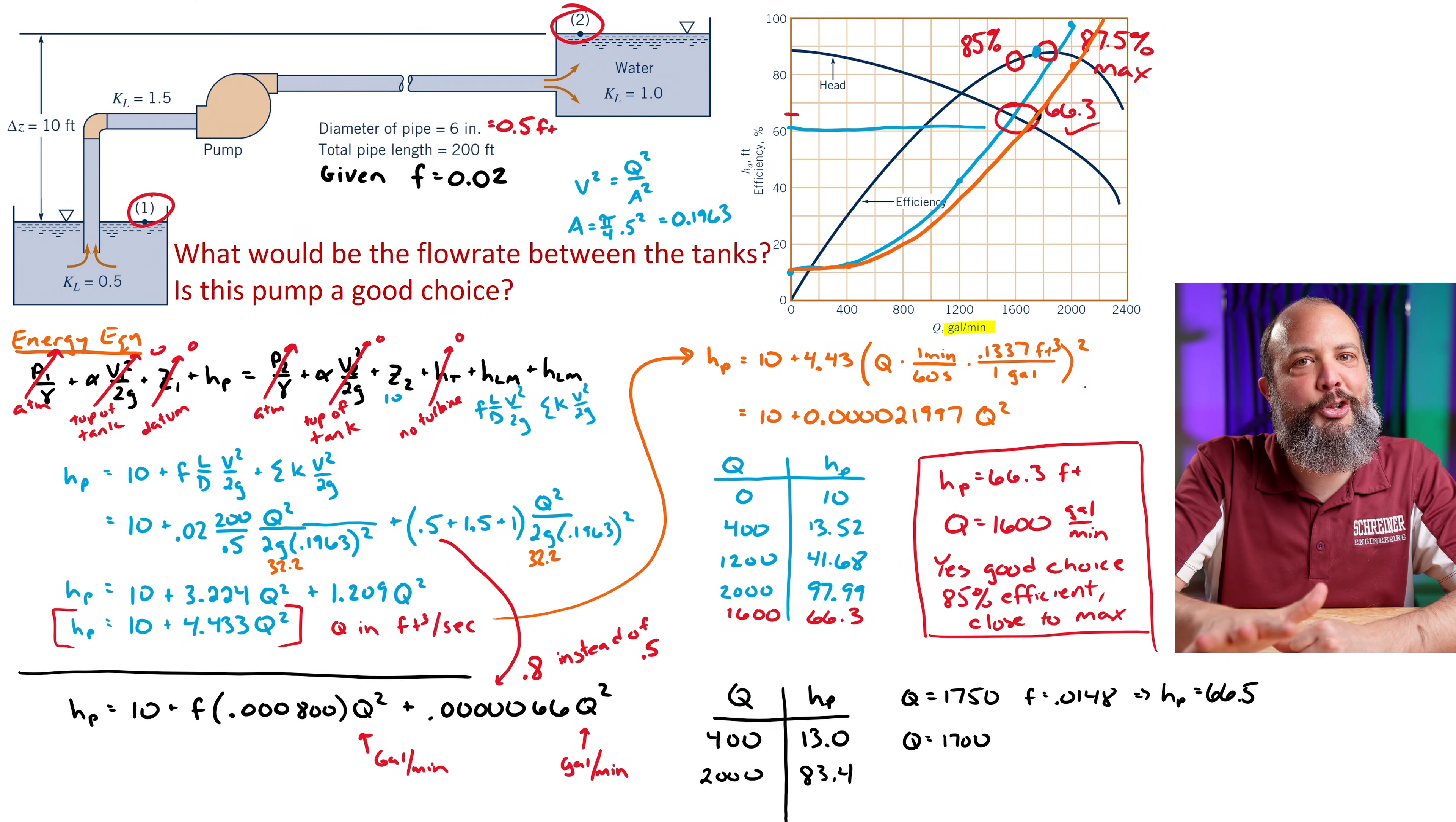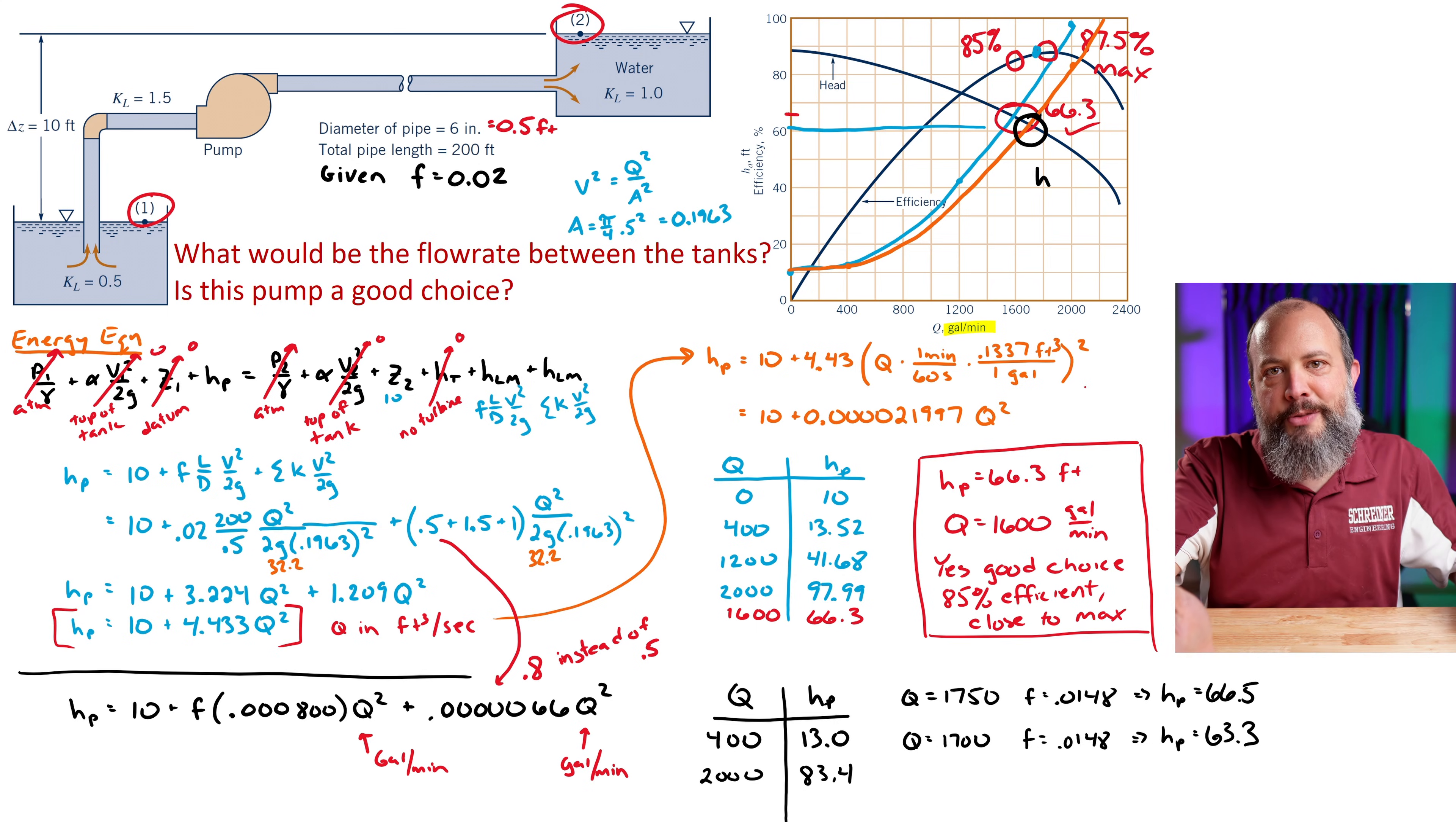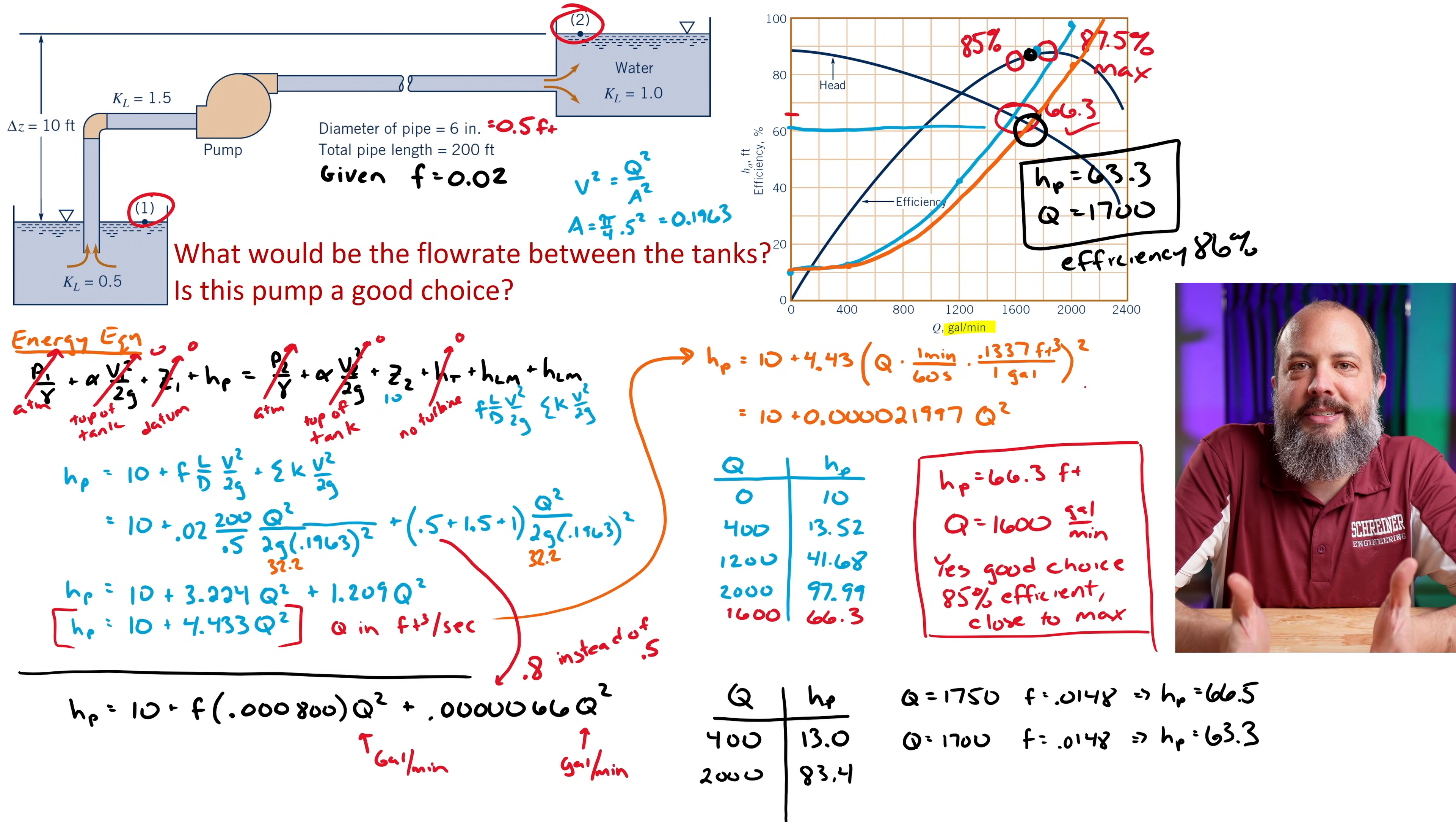And with the new line, it looks like it's actually closer to Q of 1700 gallons per minute. So if I use the same friction coefficient this time, it should be at a pump head of 63.3. And this looks like it does match the pump curve now. So in this new version of the problem where I come with my own friction loss coefficient and my own minor loss coefficients, I get a volumetric flow rate of 1700 gallons per minute, which is going to be even closer to maximum efficiency, probably closer to 86% this time. It's also still definitely a good choice of pump.